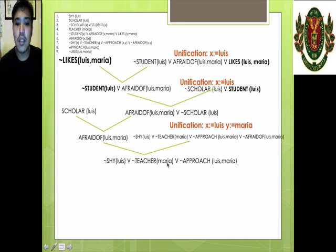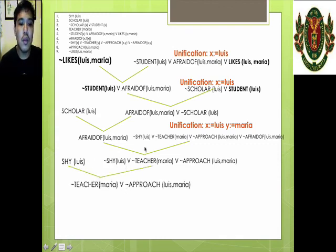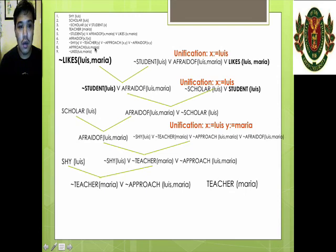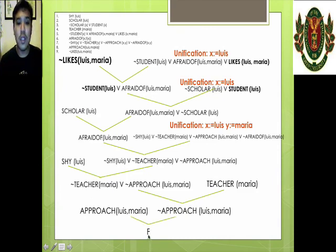We try to find something to cancel out with this. Since they have both constants, no unification is needed. We now have: Maria is not a teacher or Luis does not approach Maria. We find statement number four — teacher(Maria). We cancel out teacher(Maria) and not teacher(Maria), and are left with: Luis does not approach Maria. And we can see in statement number eight — Luis approaches Maria. We have a negation. Therefore, this proof is done — we have derived a contradiction, proving that Luis likes Maria.